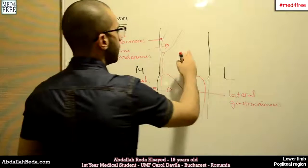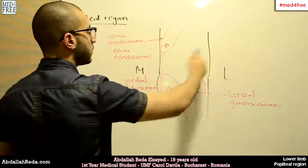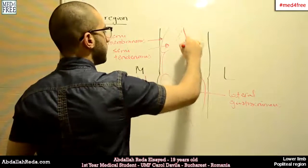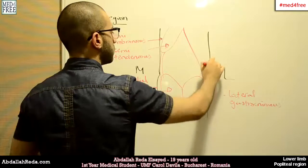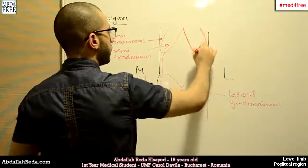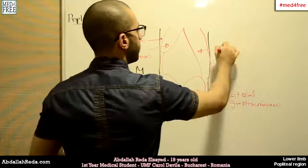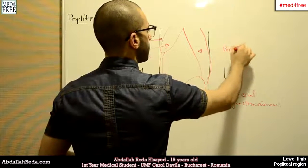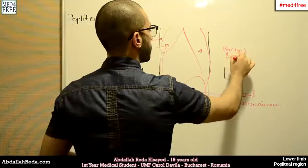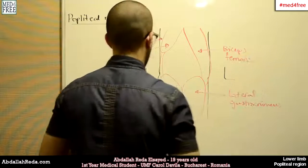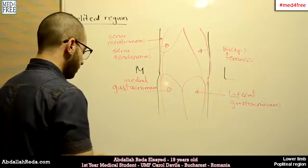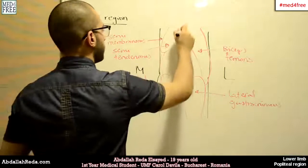And the upper lateral border is formed by biceps femoris muscle, which is around here. So this is biceps femoris. And the popliteal region is that region.